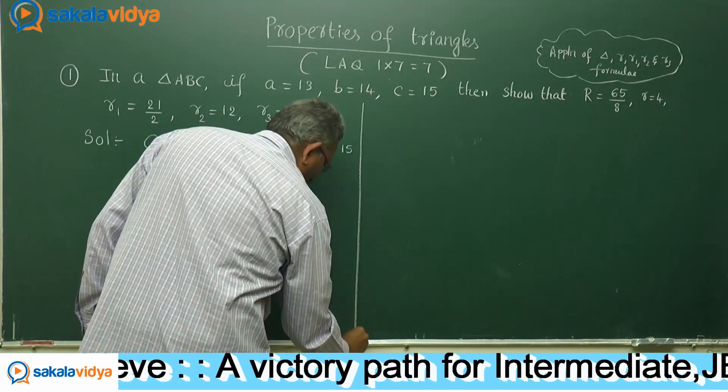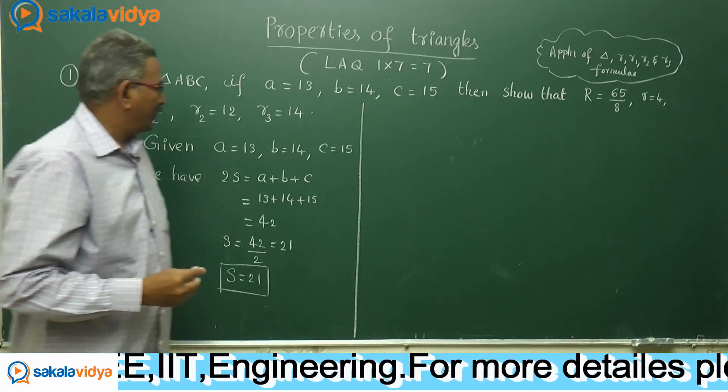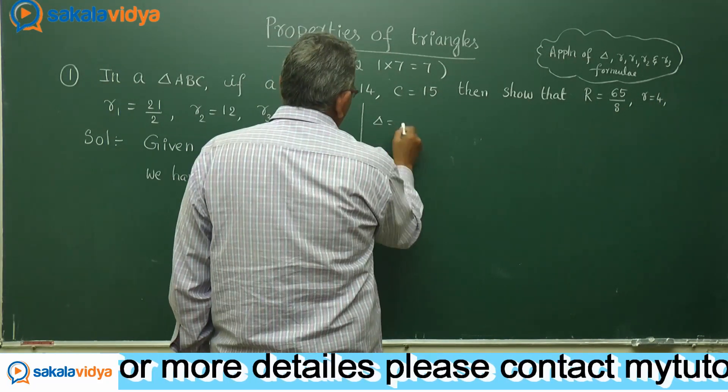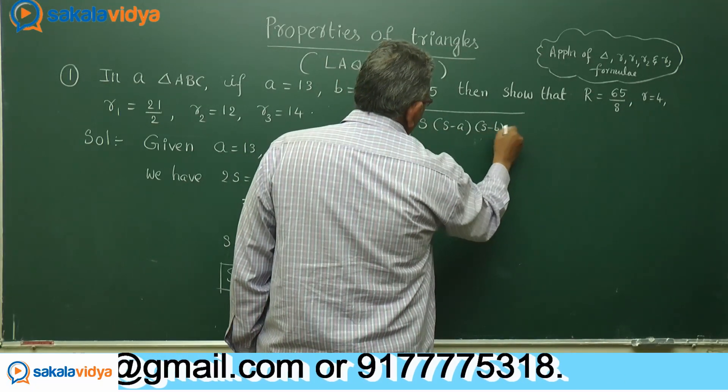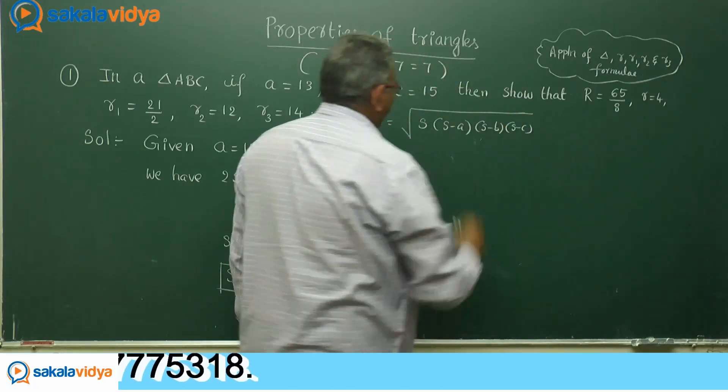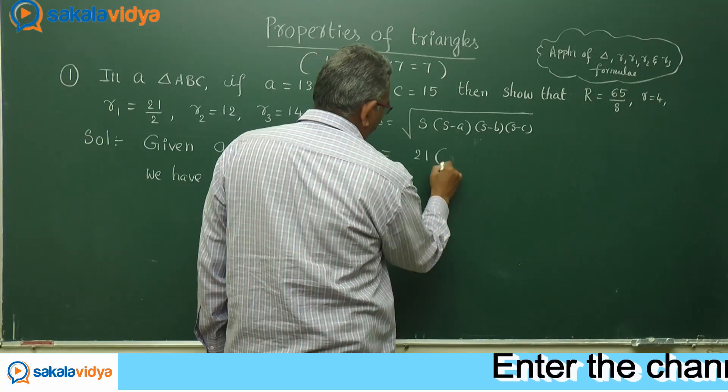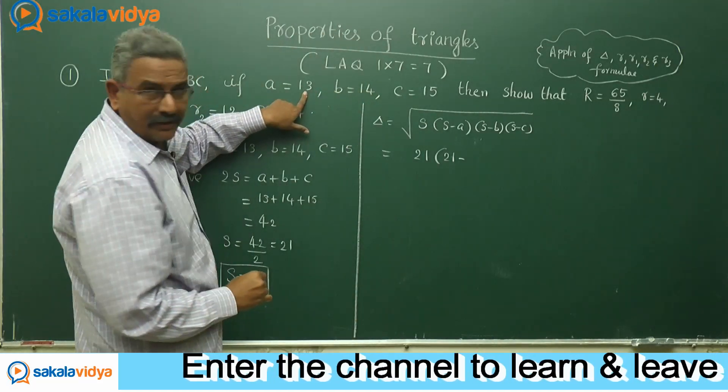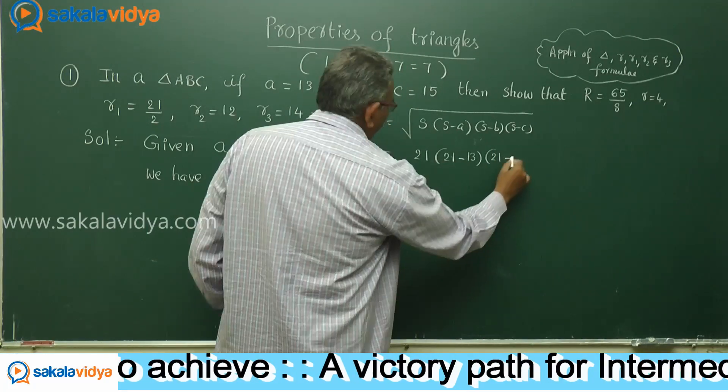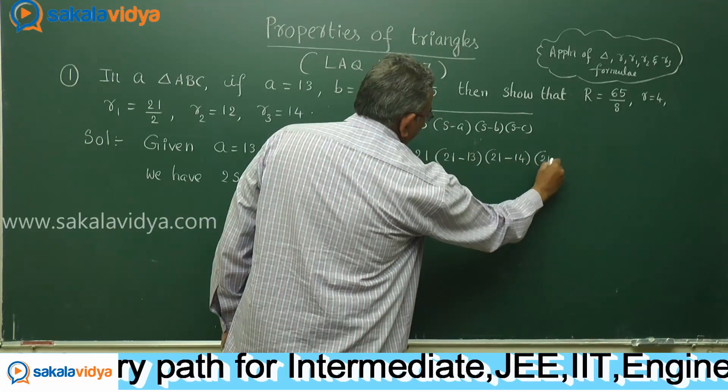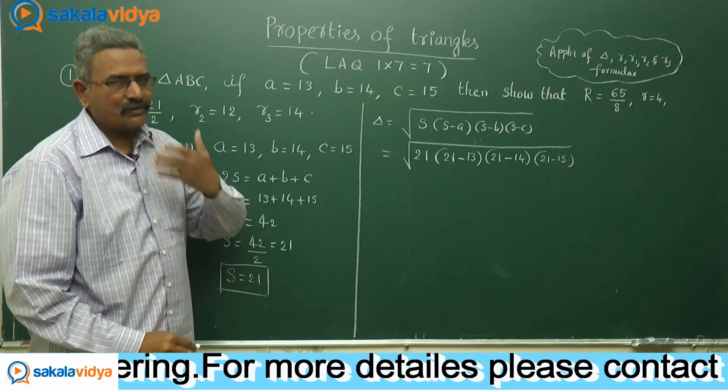Let us move to step 2. What is step 2? That is delta value. Using Heron's formula, delta is equal to root over S into S minus A, S minus B, S minus C. This is Heron's formula. Let us substitute it. 21, 21 minus A, A is 13, S minus B, 21 minus 14, S minus C, 21 minus 15 and root over.